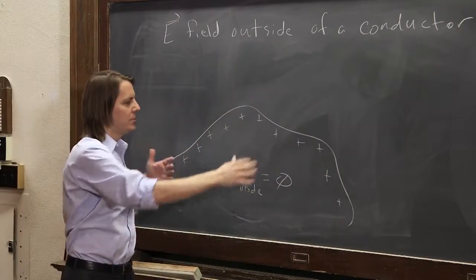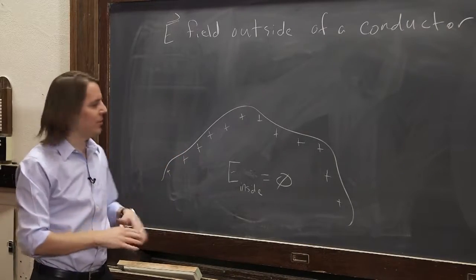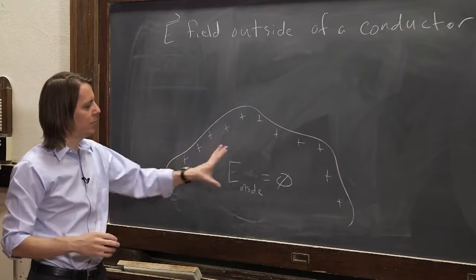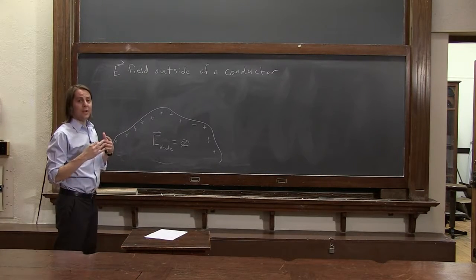And they'll arrange themselves in a way to make the inside zero. Maybe it's because the conductor is charged, maybe it's because it's been put inside an electric field, doesn't matter. The point is, they will arrange themselves in an electrostatic equilibrium, E field inside will be zero. So let's think about now the E field outside.